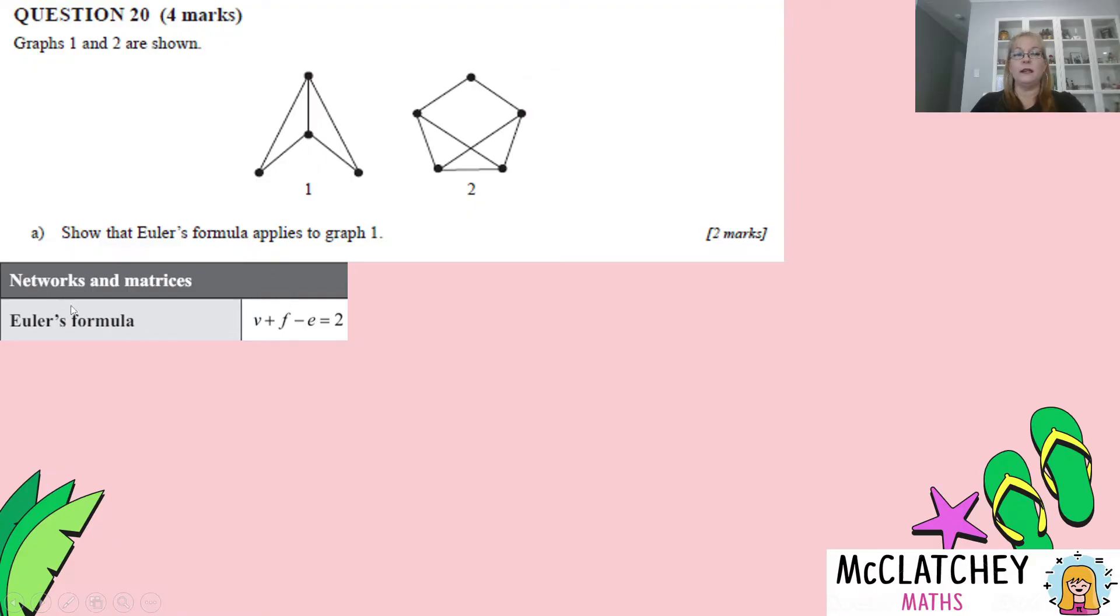Well firstly, we can pull Euler's formula straight off our formula sheet and it's got these letters V, F and E. You would recall that V stands for vertices. They're our little points or the corners. F stands for faces. So that's the enclosed shapes in a network and E stands for edges. That's our lines. So we need to count up each of those and prove that it all comes to two. So firstly, our vertices are four. One, two, three and four. Our faces are three. Now there's two enclosed spaces but remember the tricky thing about this is that you've always got this area around the network is also classified as a face. So that gives us three faces.